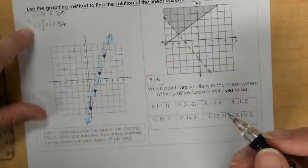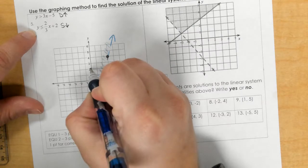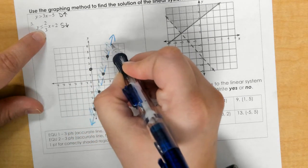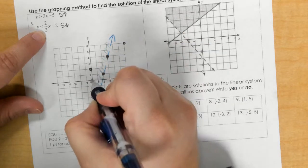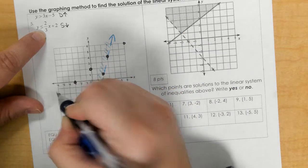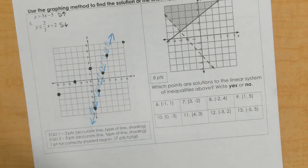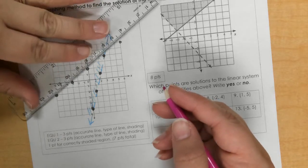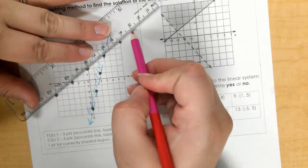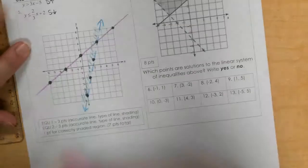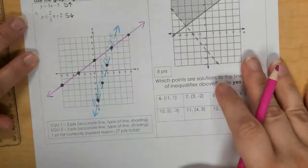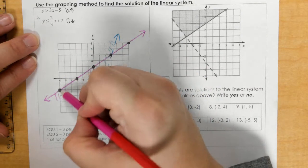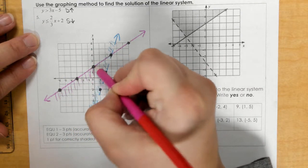For the second equation, we start at positive 2. We're going up 2, right 3. Down 2, left 3. For that one, it's supposed to be a solid line. It says less than, which is down. So this side of the graph is shaded.